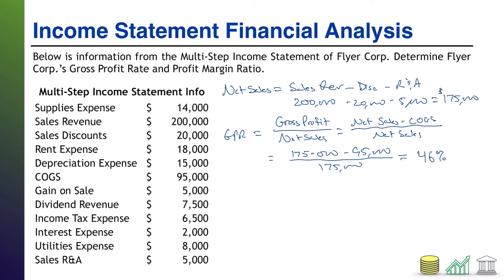So $175,000 minus $95,000 divided by $175,000 gives us approximately 46% gross profit rate. What that tells us about the company — more importantly than just being able to do the math — is they have a markup on their product of approximately 46%. When you subtract out the cost to the company to buy the product, they keep 46% of what they charge the customer. That brings us to profit margin ratio, or PMR. Profit margin ratio is similar, except instead of dividing gross profit by net sales, we divide net income by net sales.